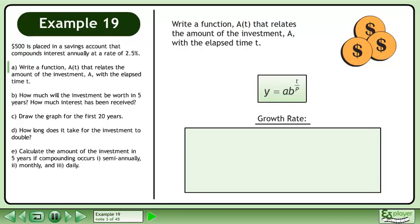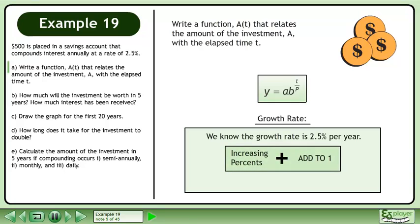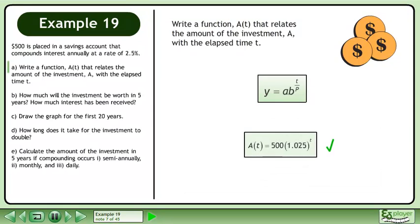First we'll determine the growth rate. We know the growth rate is 2.5% per year. When we have an increasing percent, we add it to 1. The b value for this question is 1 plus 0.025 equals 1.025. The function is A equals 500 times 1.025 raised to the power of t.